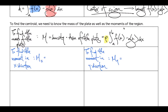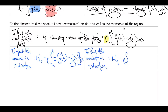The formulas also include rho, but since it cancels out, it's not required. The formula for the moment in the x direction is: rho times the integral from a to b of one-half times f of x squared minus g of x squared, dx. The moment in the y direction is: rho times the integral from a to b of x times f of x minus g of x, dx.